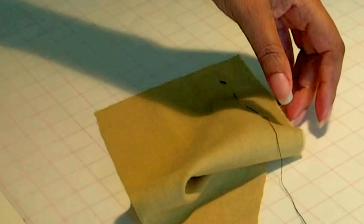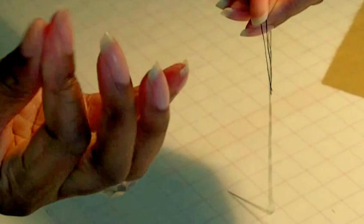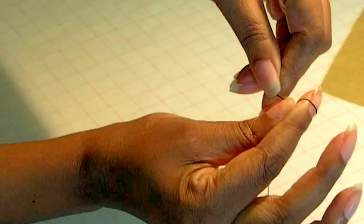Okay, and if you are doubling your thread, it's the same procedure. This time I've got two tail ends there. Moisten your finger, remember you don't want a wet finger, just moist so that you can roll it. Wrap it around your finger there, and then push it forward. Get your other finger, bring it down, and there's your knot.